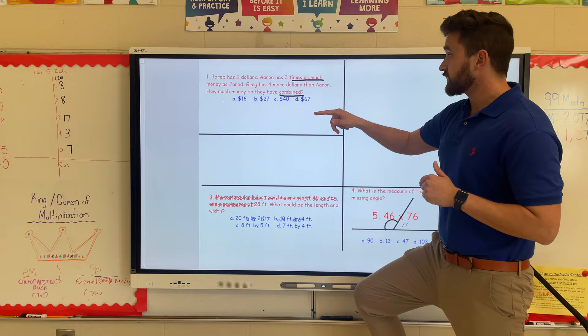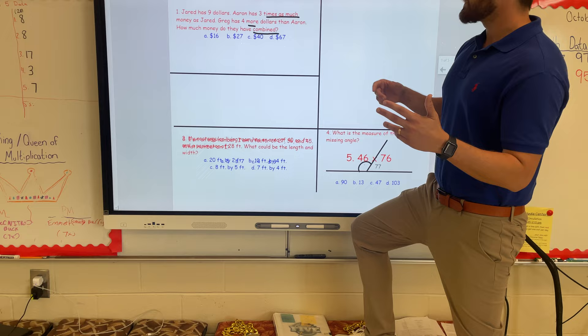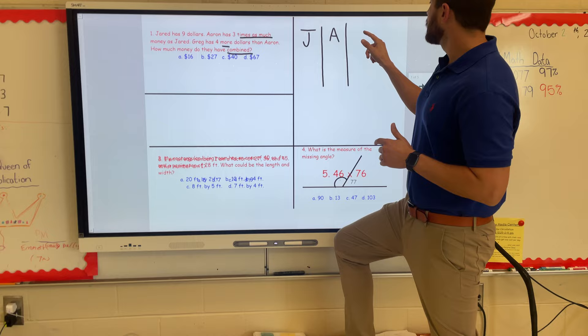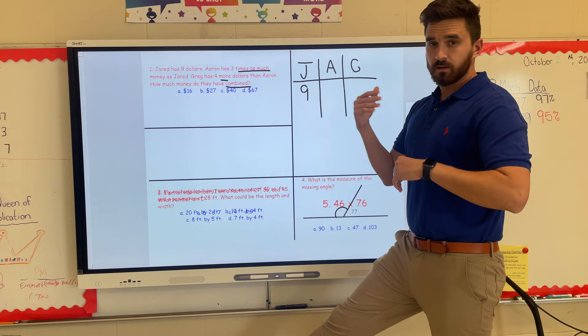We've got 'times as much' on there which we've been dealing with—multiplicative comparisons all week, all year really. We've talked about combined, but we've also got more. Some kids tried to just go straight into the box method, but we had never done a multiplicative comparison with more than two people. I told them a T-chart would have been their best move here. You've got Jared, Aaron, and Greg, and the only person we know right now is Jared—he's got nine bucks.